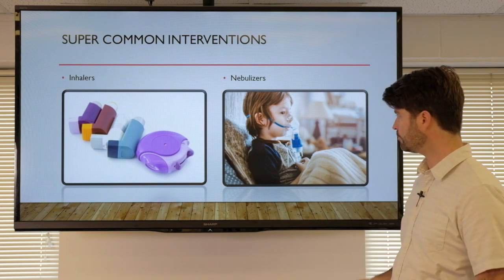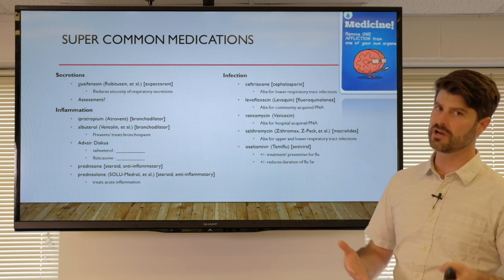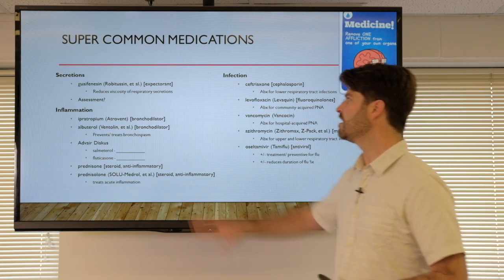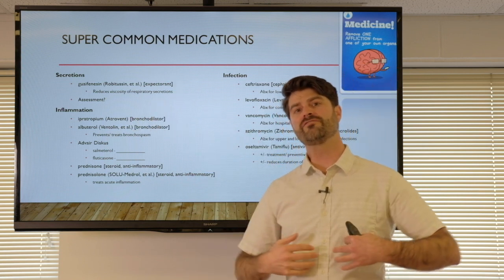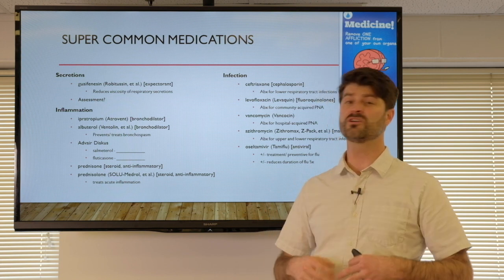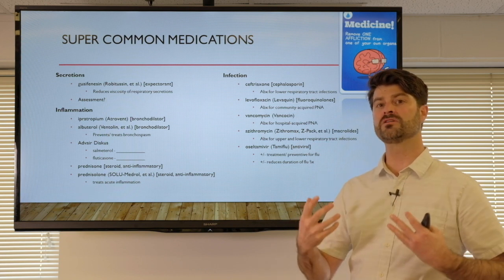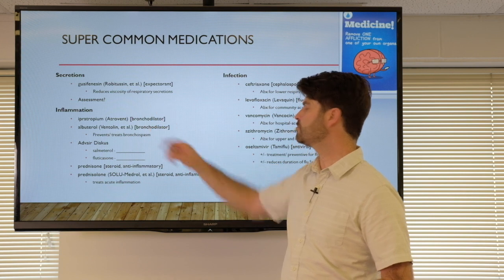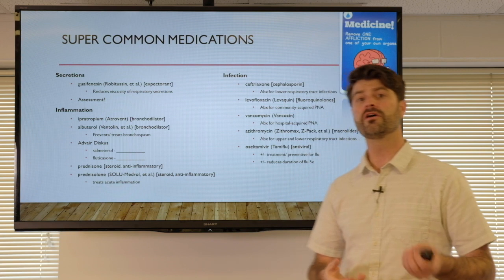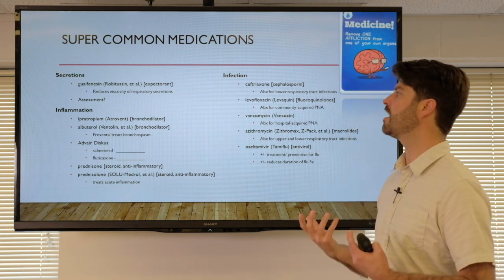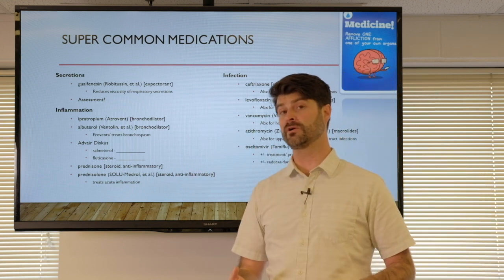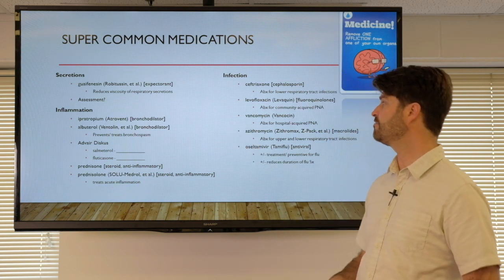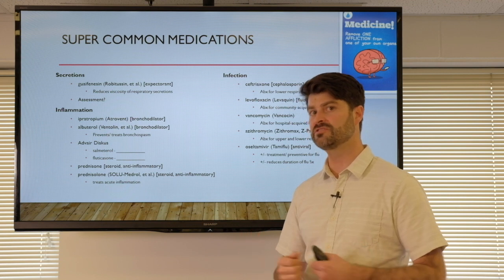Some very common medications you'll see in the community: for secretions, we want to thin them out. If you get dehydrated, mucus production can be really thick and hard to cough out. For patients with a compromised respiratory system, we give medications such as guaifenesin or Robitussin, which reduce viscosity — thinning secretions so they can be more easily expelled through coughing and deep breathing. For assessment, always ask patients: have you been coughing, do you have a productive cough, and what does it look like?